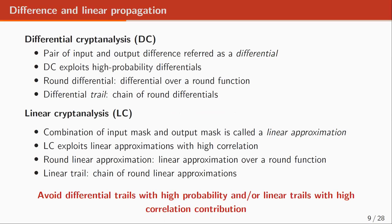Let's first see some preliminary notions on diffusion. In differential cryptanalysis, a pair of input and output difference is called a differential, and this attack exploits high probability differentials. A round differential is a differential over one function, and a differential trail is a chain of round differentials. In linear cryptanalysis, the combination of input mask and output mask is called a linear approximation, and these attacks exploit linear approximations with high correlation. We want our permutation to have differential trails with low probability and linear trails with low correlation.